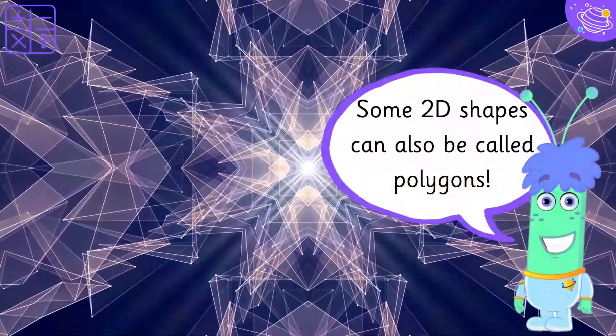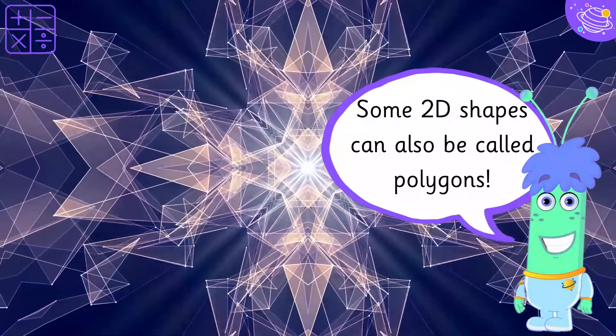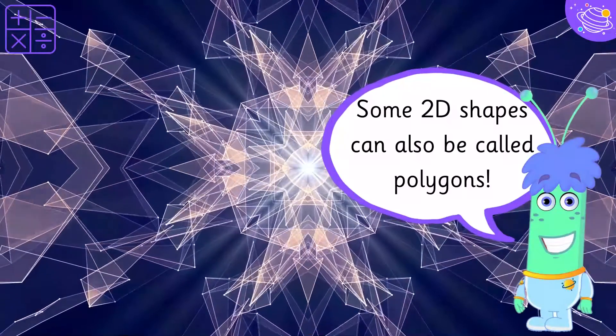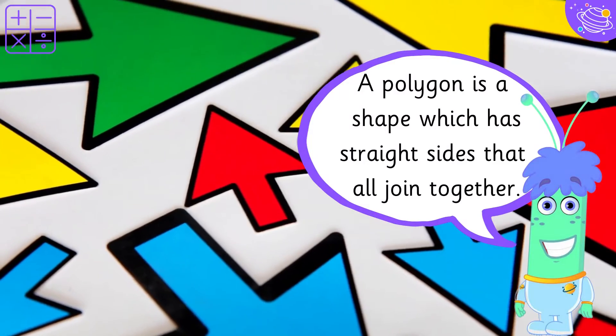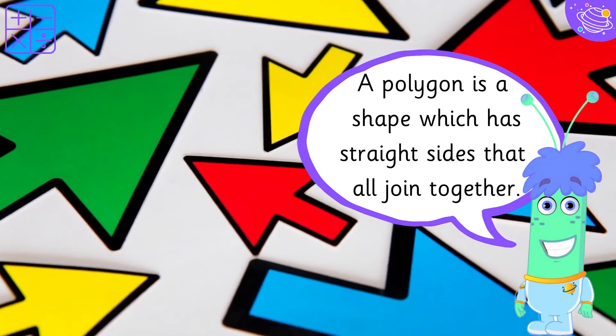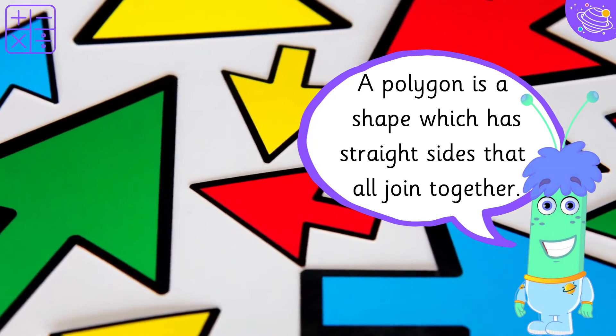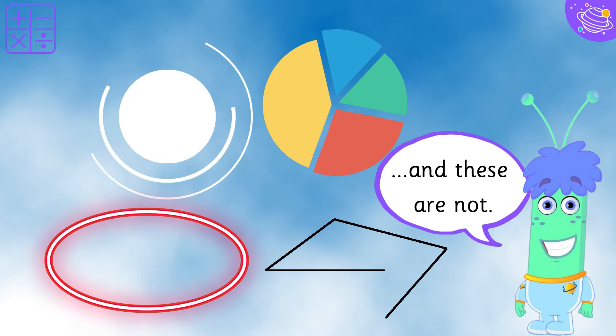Some 2D shapes can also be called polygons. A polygon is a shape which has straight sides that all join together. So these are polygons. And these are not.